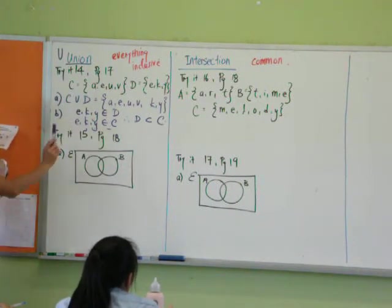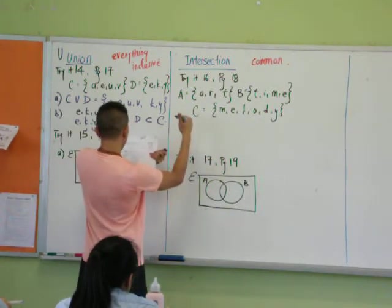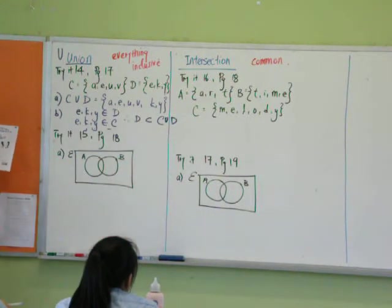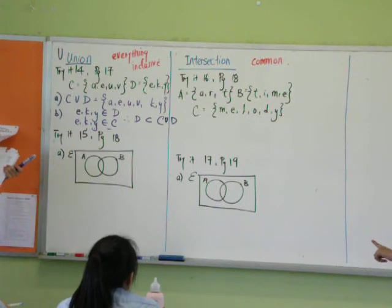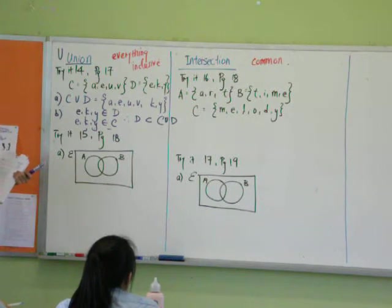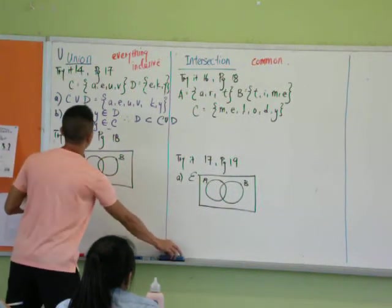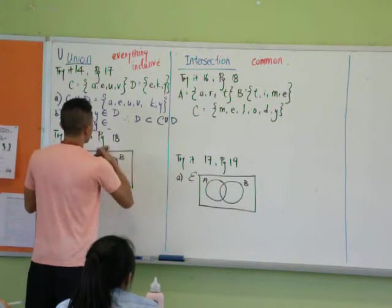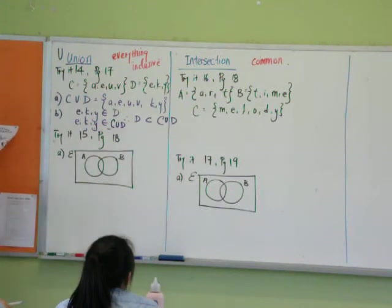But E and Y as a binary will be in C union D, but not C union D. Alright? E, A, Y is the element of C. Oh sorry, E, A, Y is the element of C union D. Alright? Okay.